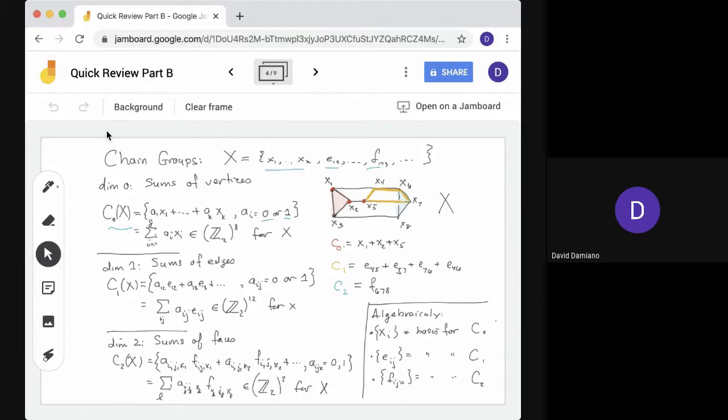If we go to dimension 1, so here's C1(X) on the left, we're thinking of sums of edges. Here's an example. We have a12·e12 plus a13·e13 and so on. If a coefficient aij is 0, then you would say the edge is not present. If it's 1, it's present in the sum. Now again, in the example on the right, we see we have 12 edges. So in this case, our sum would be an element of 12 copies of Z2.